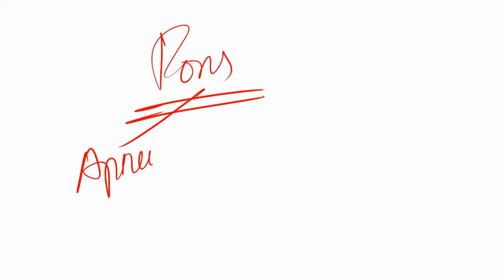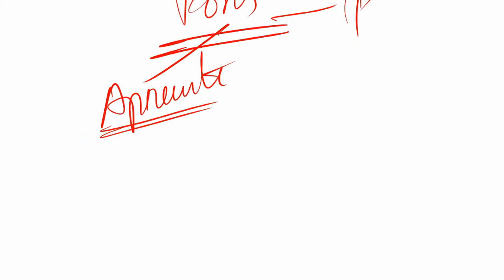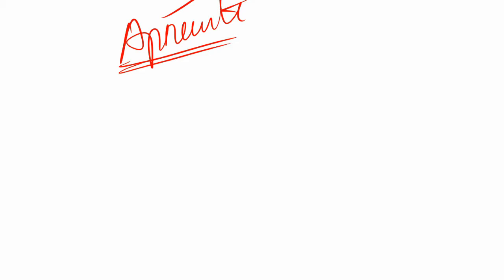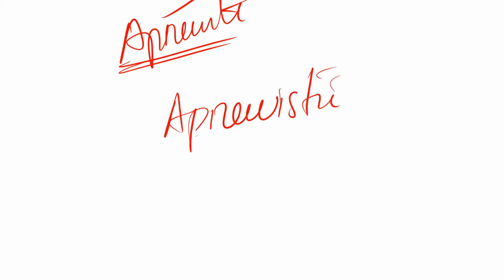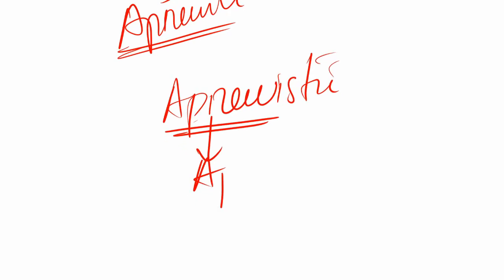Now let's look at the pons centers. In the pons you have the apneustic center and the pneumotaxic center. To better understand the apneustic center, let's consider what its name implies. Apneustic overstimulation leads to a condition called apneosis — which should not be confused with apnea. Apnea means absence of breathing, but apneosis is something different.